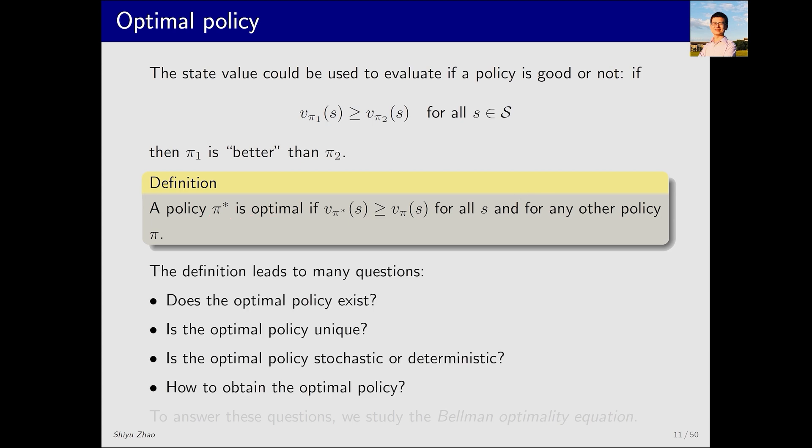These definitions seem straightforward, but after presenting them, we need to address a series of questions. For instance, does the optimal policy exist? It might seem unrealistic that such a policy outperforms all other policies across every state. Is it possible that a policy can only outperform others in some states but not in others?